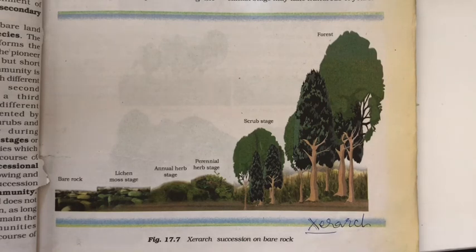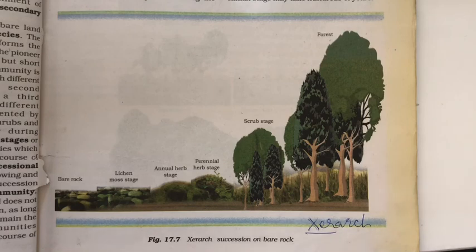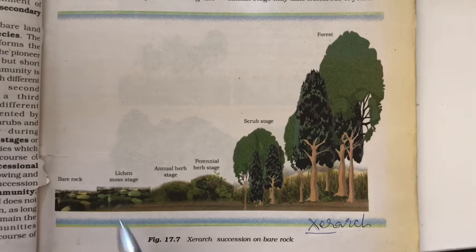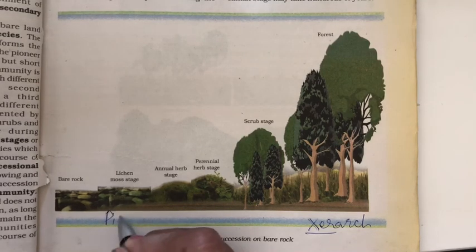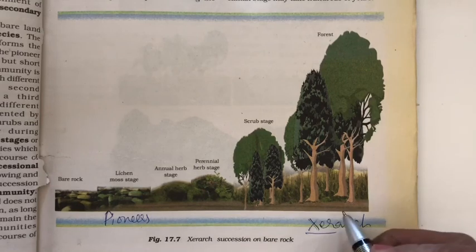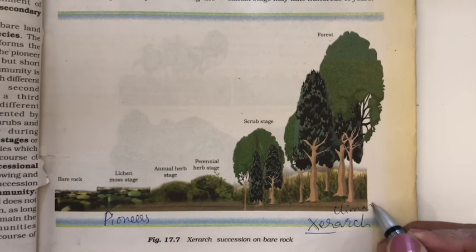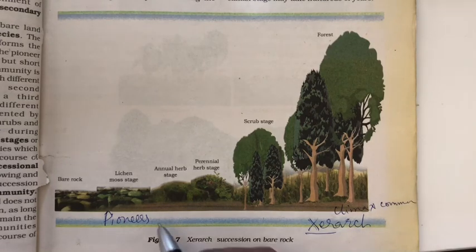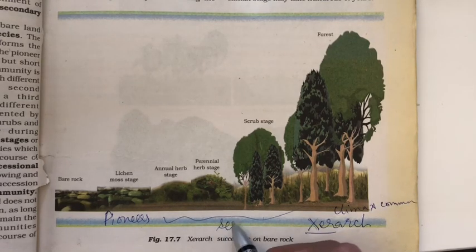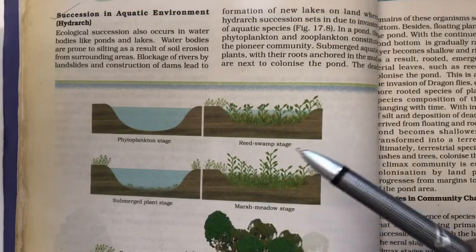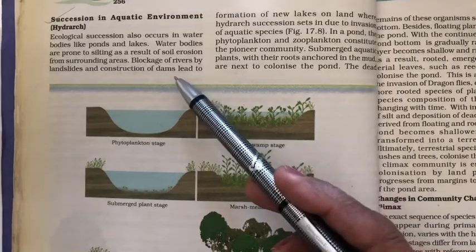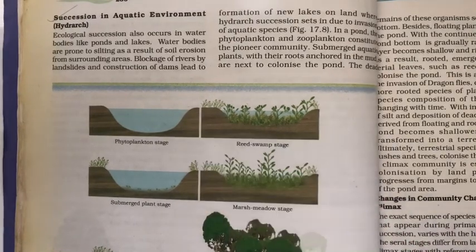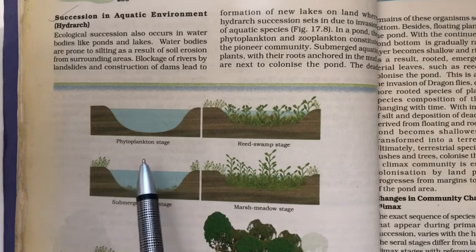This kind of sequential, gradual change on a dry barren land is called xerarch. 'Xero' means dry. The first living organisms to colonize are called pioneers, the last stage is the climax community, and the in-between stages are called seral stages.